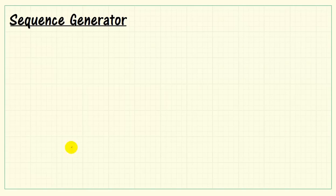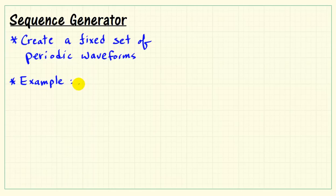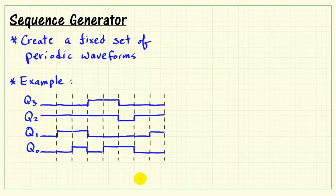Now I'd like to show you how to implement a sequence generator in LabVIEW. Suppose that we need to create a fixed set of periodic waveforms. For example, we could begin with a 4-bit register and say we wanted to make this pattern that eventually repeats.